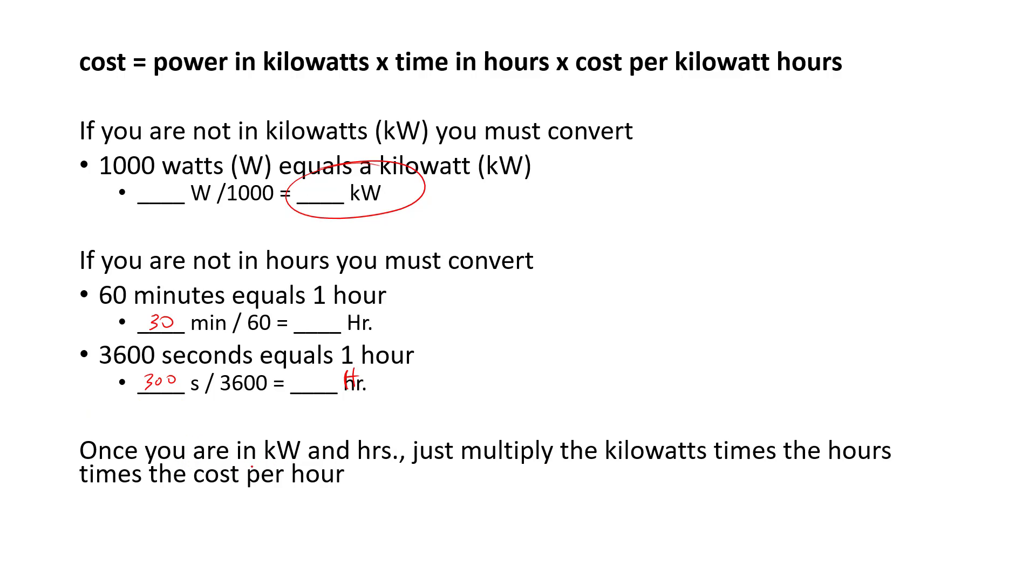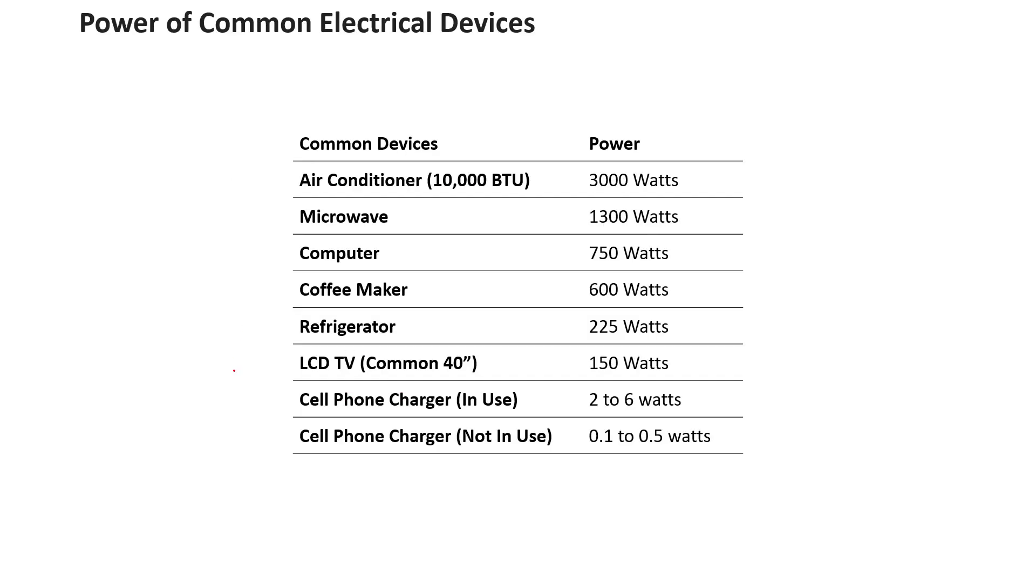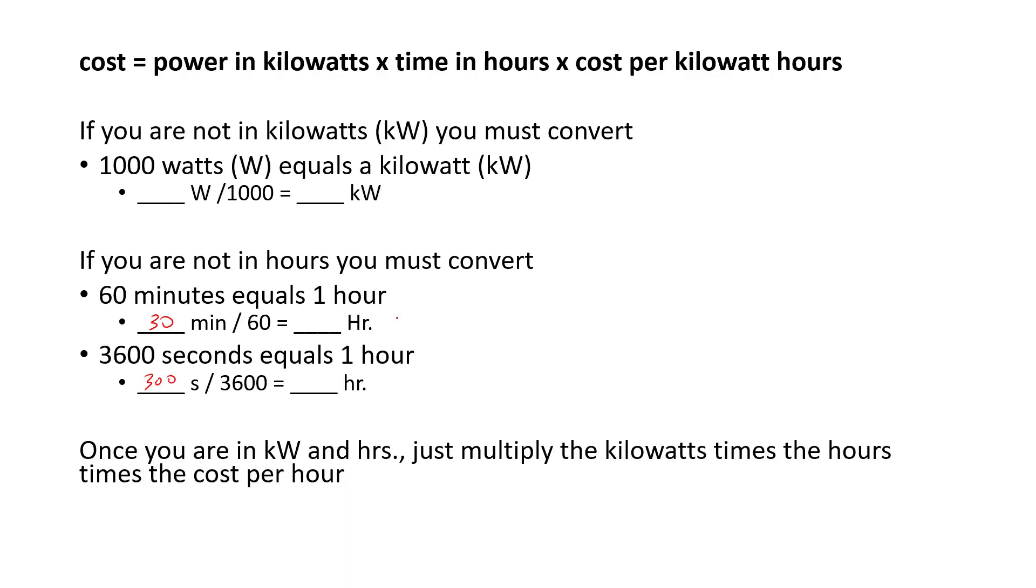Once you are in kilowatts and hours, just multiply the kilowatts times the hours. So you'll finish off the problem just by multiplying the power in kilowatts times time in hours, and then the cost, and then whatever unit we were billed in. In the previous example, we were billed in cents, so the unit for this one when we were done would be cents.